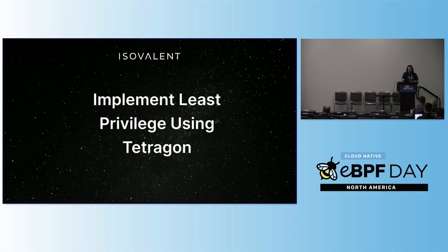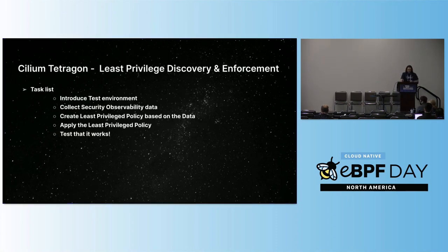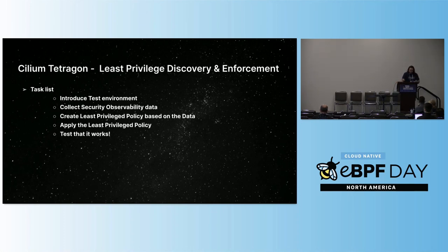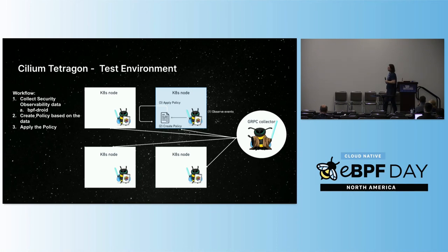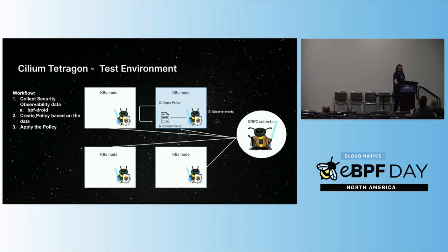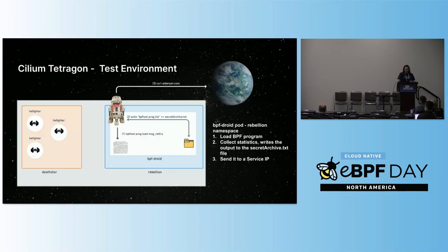So this gives us our tool set. Let's start implementing least privilege. What's our task list? First we need a test environment, then we're going to collect some data to figure out what our pods are doing — because we don't actually know what they're doing. Then we'll create a policy, apply it, and see that it works. We have a set of pods and a gRPC collector that listens to the output of each Tetragon node and creates a list of events that you would want to watch for. I could talk through it, but I'm going to try to demo it here.